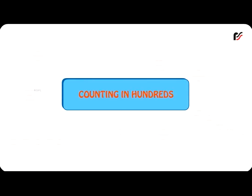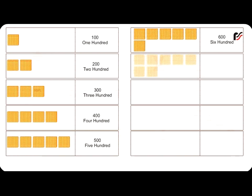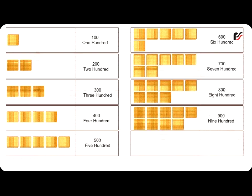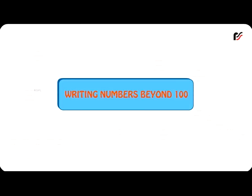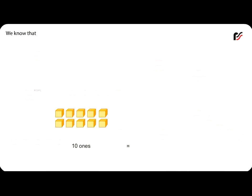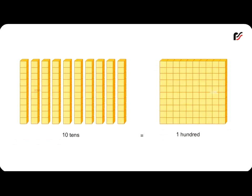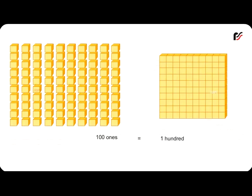Counting in hundreds: 100, 200, 300, 400, 500, 600, 700, 800, 900, 1000. Writing numbers beyond 100: we know that ten ones is equal to one ten, ten tens is equal to one hundred, and one hundred ones is equal to one hundred.